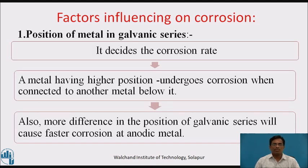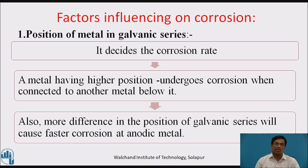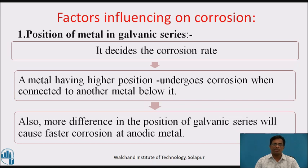First, position of metal in galvanic series — it decides the rate of corrosion. A metal having a higher position undergoes corrosion when connected to another metal below it. Also, more difference in position in the galvanic series will cause faster corrosion at the anodic metal.